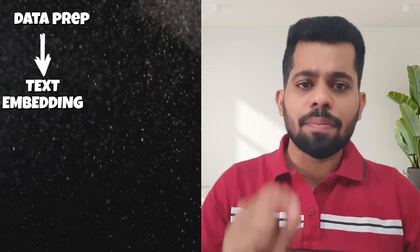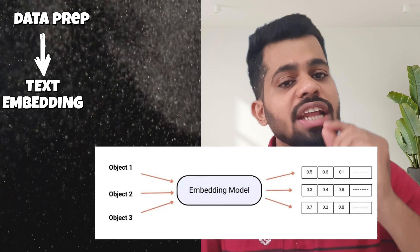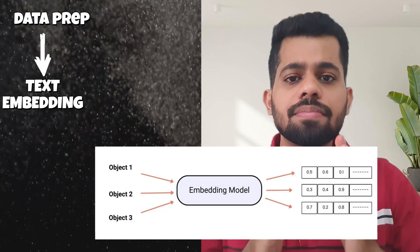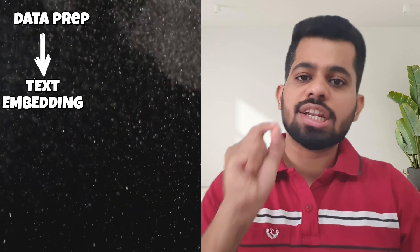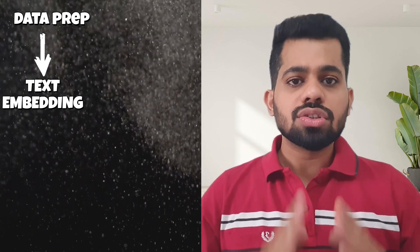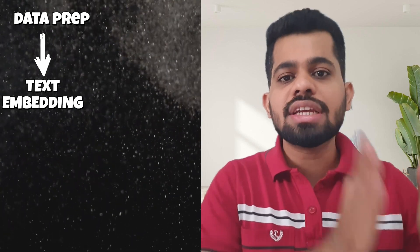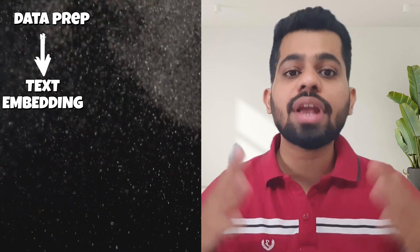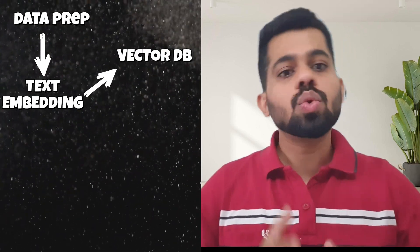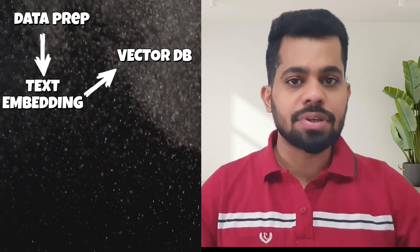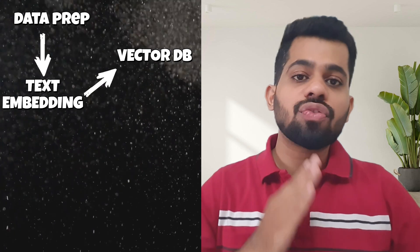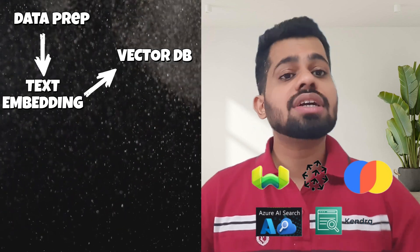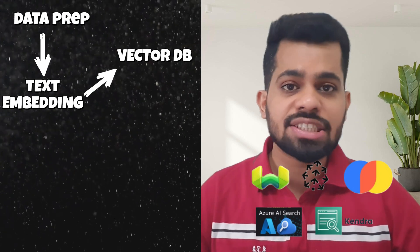The next step is embedding: convert each chunk into a matrix of numbers also called vectors. These are called embeddings — giving each piece of text a unique set of numerical representations, because models only understand numbers. So embedding means converting each chunk into a meaningful numerical representation called vectors. The third step is storing these vectors. For that we need a database, but not a normal one — we need a vector database. Popular choices include Pinecone, Chroma, FAISS, Weaviate, or even cloud solutions like Azure AI Search or AWS Kendra.